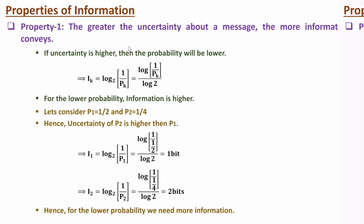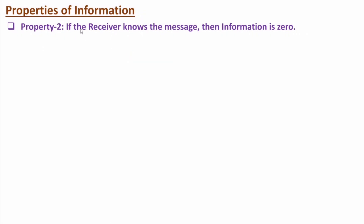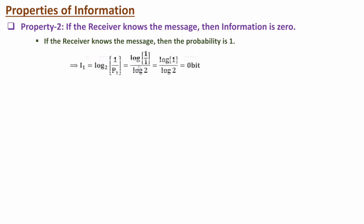The second property states that if the receiver knows the message, then information is 0. If the receiver knows the message, then the probability of the message is 1. And if you apply this in the information equation, log(1)/log(2) = 0, meaning information with the given message is 0, because the receiver already knows the message.